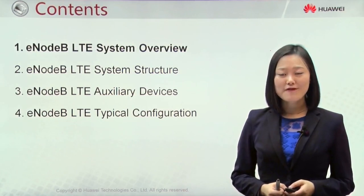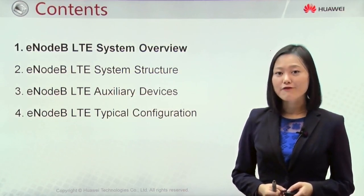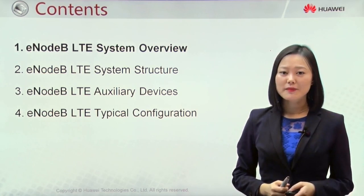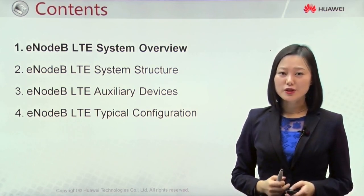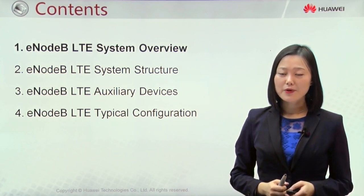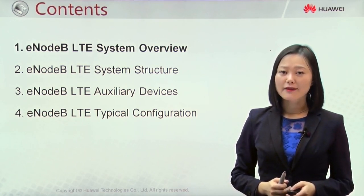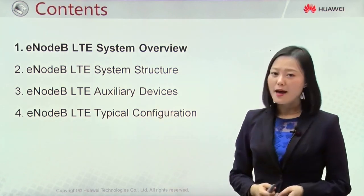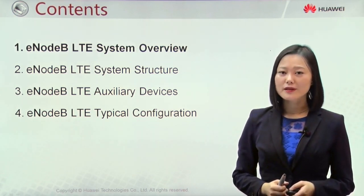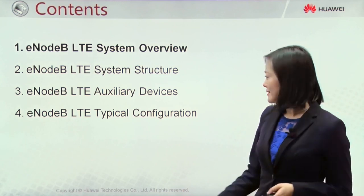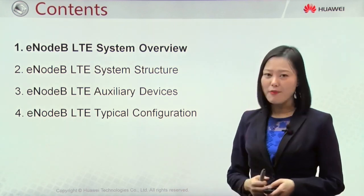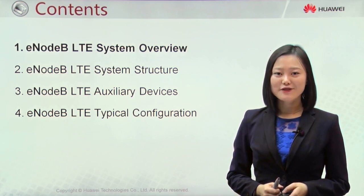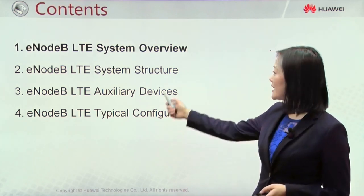Our course will be divided into four chapters. The first is E0B LTE system overview. The second is E0B LTE system structure, where we will introduce two main components — BBU and RFU — covering their hardware and logical structures. The third part is about auxiliary devices, mainly the different types of cabinets used in E0B products. The last chapter will give examples of typical configuration of E0B. Now let's start from the first chapter: LTE system overview.